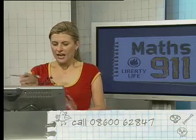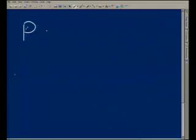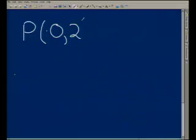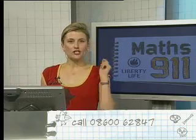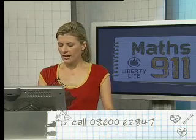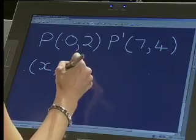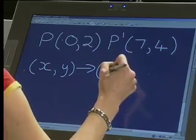Now the first question we're going to look at: we start off with the point P, where X is 0 and Y is 2. Then we translate the point P to P dash, and the coordinates of P dash are X is 7 and Y is 4. What they want us to do is determine the following translations and give the answer in the form of what we did to X and what we did to Y.